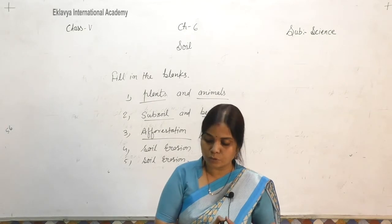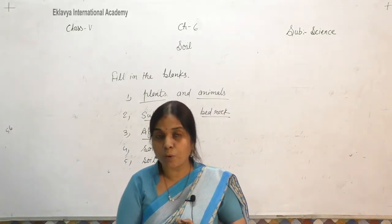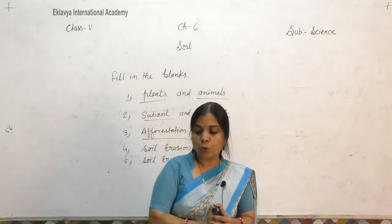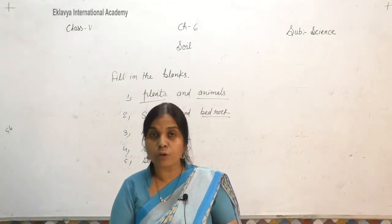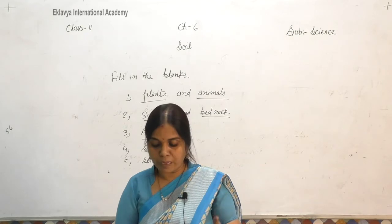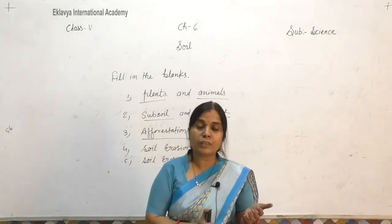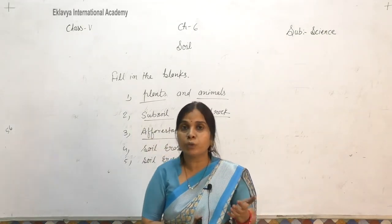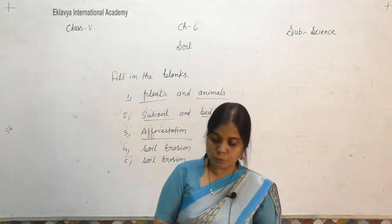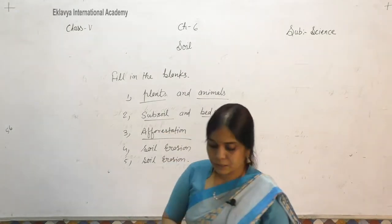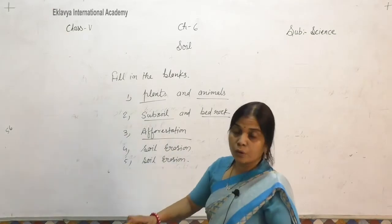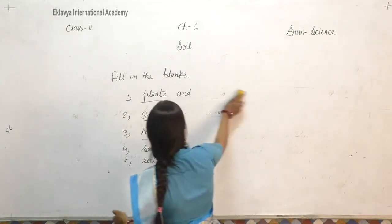Fourth: terrace farming or cover crops prevent soil erosion — terrace farming and cover crops stop soil erosion. Fifth: running water and wind cause soil erosion. If there is heavy rain or strong wind, they cause soil erosion. Now take out your notebook and write properly.